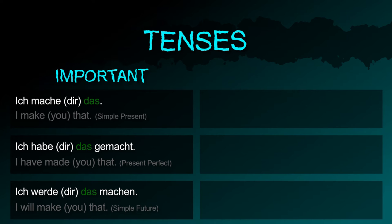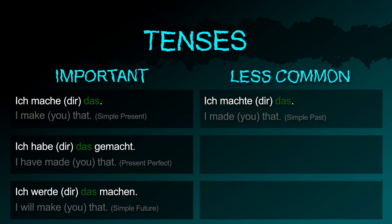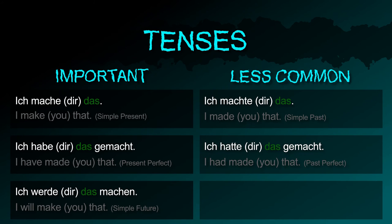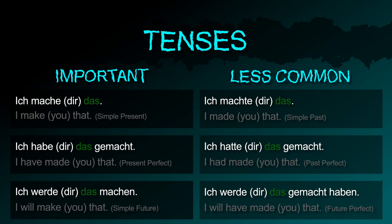Less common tenses — simple past: ich machte das; past perfect: ich hatte das gemacht; future perfect: ich werde das gemacht haben.